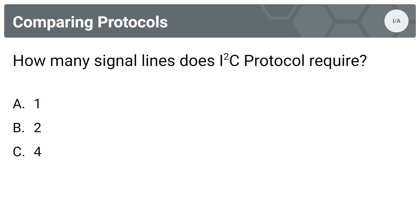Next question: how many signal lines does I2C protocol require? Options are A, one; B, two; or C, four. The answer is option B, two signal lines. We have one line for data — that's SDA — and one line for the clock signal — that's SCL.